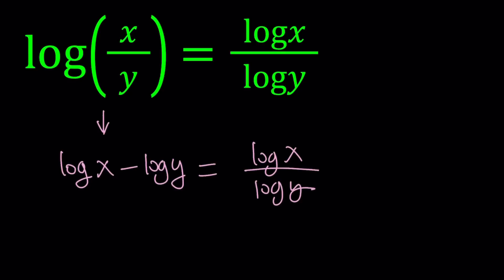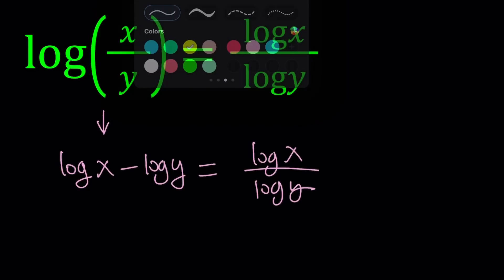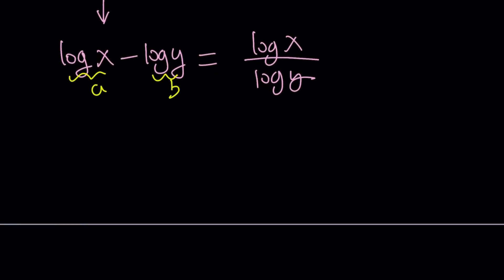Now for simplicity's sake, I'm going to use substitution here, which is going to make things a little easier. Let's go ahead and call this a and call this b. So that gives us a minus b equals a over b. Instead of writing the log every time, I'm just going to use a and b, and then back substitute.